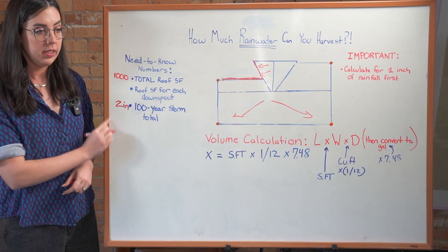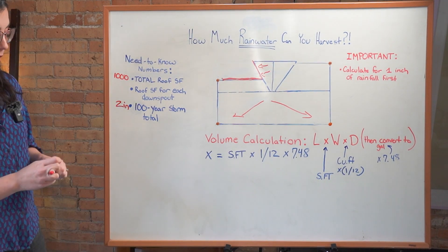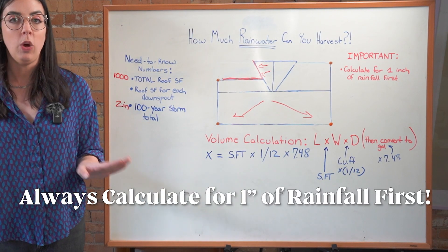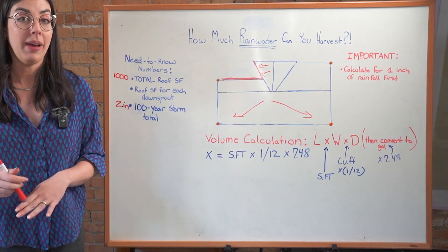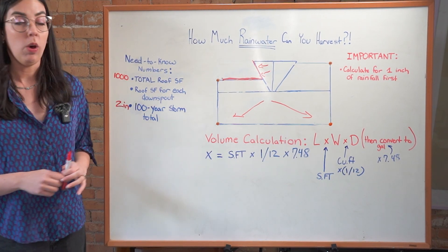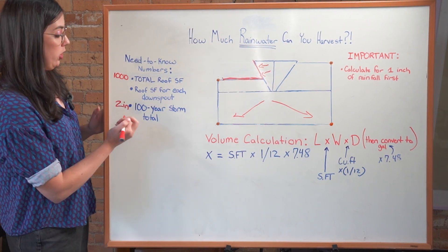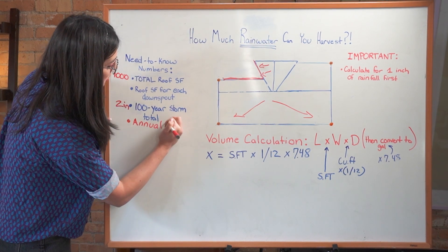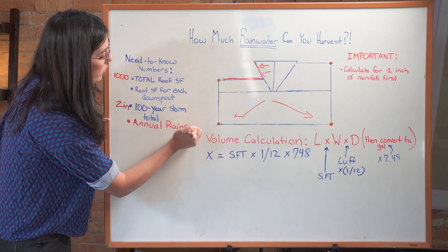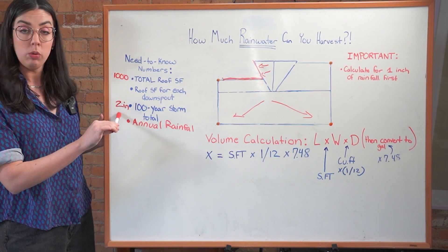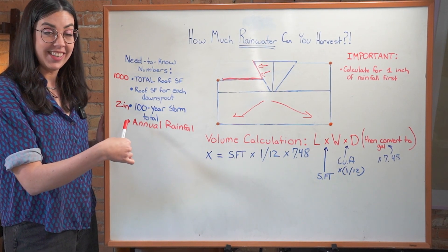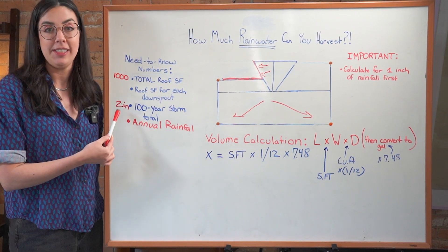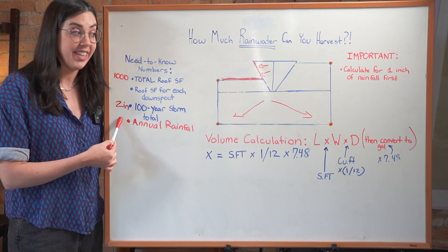Once you have those numbers, you're honestly 50% or more of the way there. The first thing you need to know when we start to calculate how much water your roof can harvest is that we are always calculating for one inch of rainfall first, because then you can multiply that by whatever you want. If you want to figure out how many gallons of water you get annually, you can do that by googling your annual rainfall total. In Utah, northern Utah, that's 22 inches. Or you can multiply that one inch number by two, and now you know what your 100 year storm event is. That's important because we want to make sure that when it's raining about as much as it's ever going to, that we are maximizing our harvesting and capturing all of that water and not wasting it.